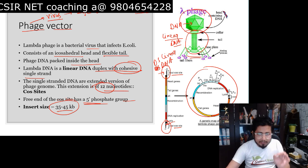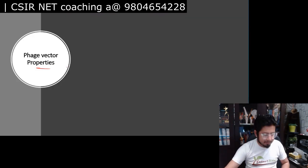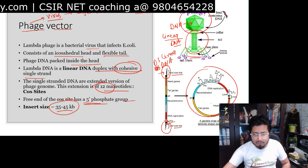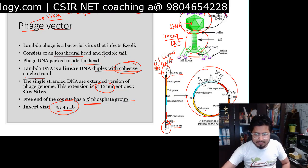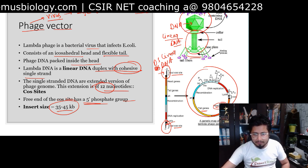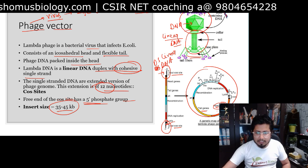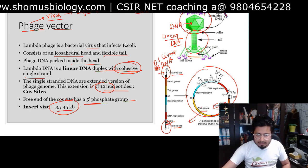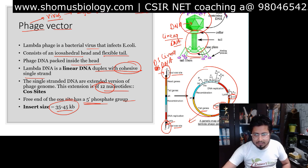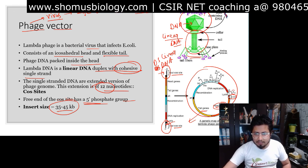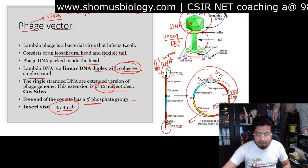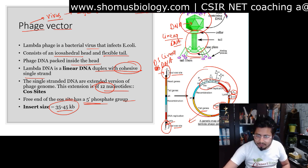Looking at the properties of the phage vector: after joining, you can see there are head genes — genes coding for the head part of the phage — and tail genes coding for the tail part. There are also the cos sites or cohesive sites, a promoter region, and genes responsible for the lytic-lysogenic switch.